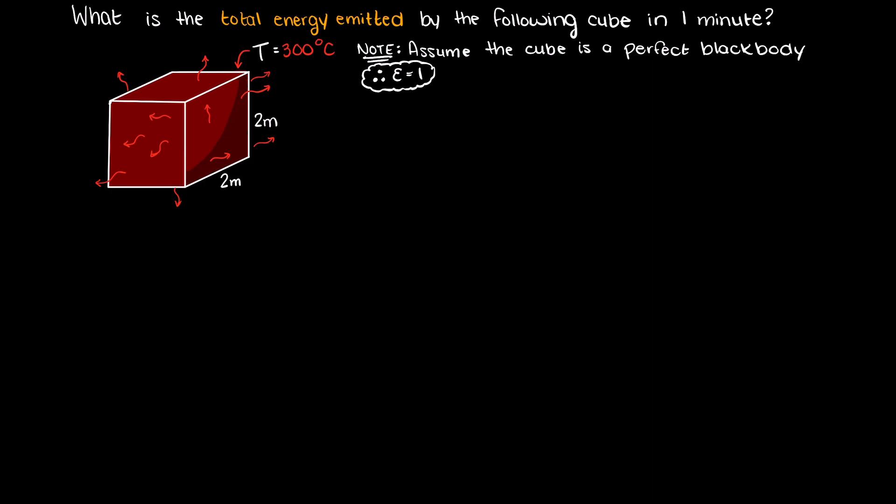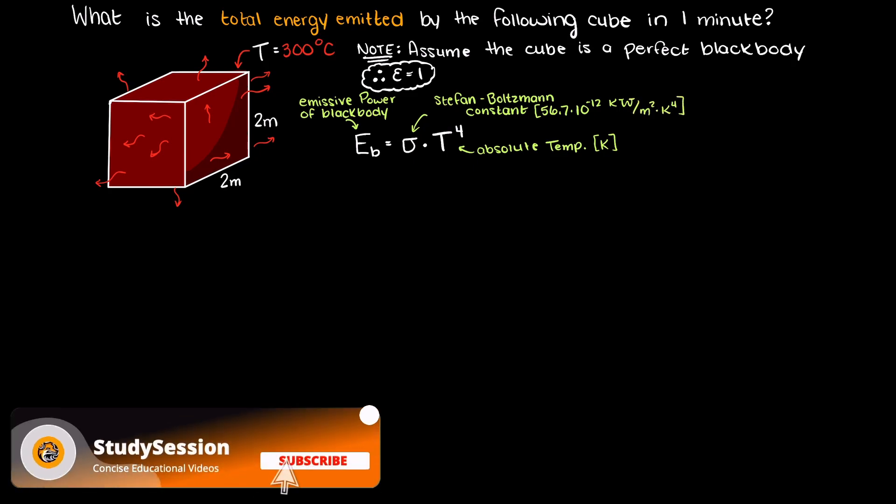So, if you have seen our previous videos on the Stefan-Boltzmann law, then you know that we can describe the energy emitted by a black body through the following equation, which states that the emissive power of the black body is equal to the Stefan-Boltzmann constant times the absolute temperature of our body to the 4th power.